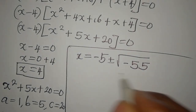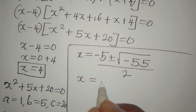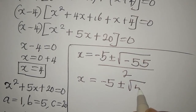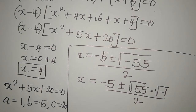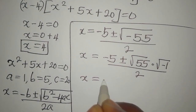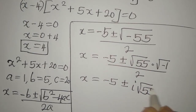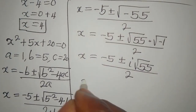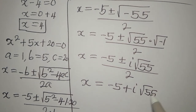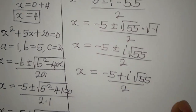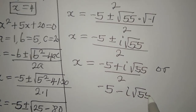We proceed: x equals minus 5 plus or minus the square root of 55 times the square root of negative 1, over 2 — because 55 is not a perfect square. So x equals minus 5 plus or minus i√55, all over 2. This gives x equals (minus 5 + i√55)/2 or x equals (minus 5 minus i√55)/2.